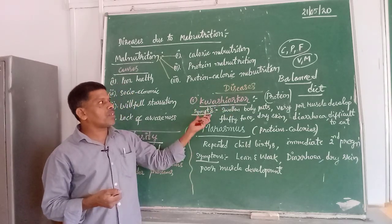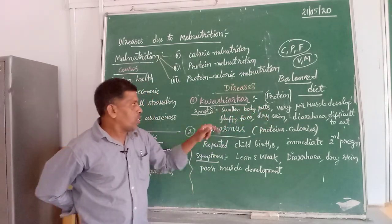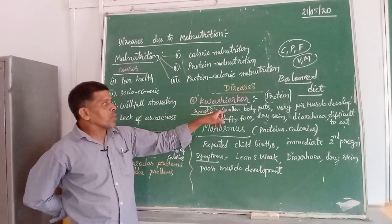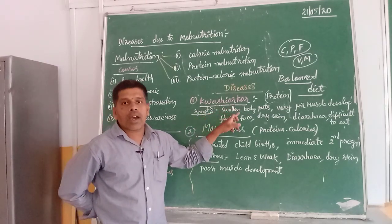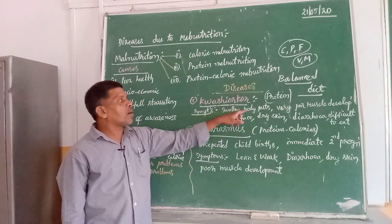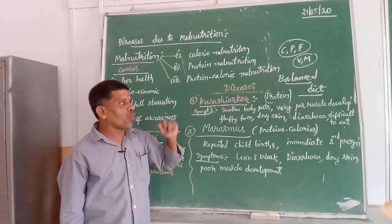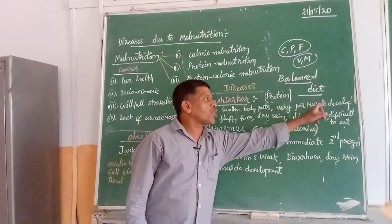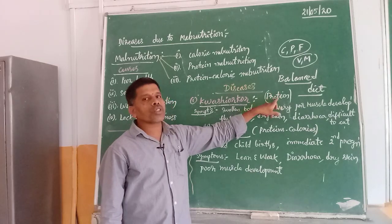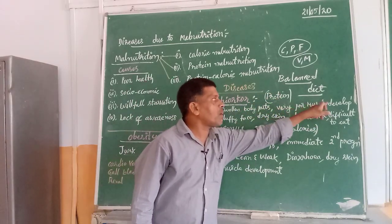What are the symptoms of this disease? The child is found to have swollen body parts. This is because the intercellular spaces are filled with water — due to the accumulation of water in the intercellular spaces, the body parts appear swollen. Hands and legs will be swollen, and there will be very poor muscle development, since proteins are meant for body growth.